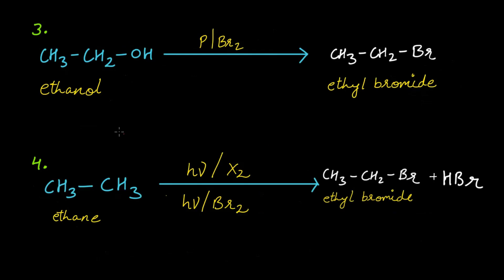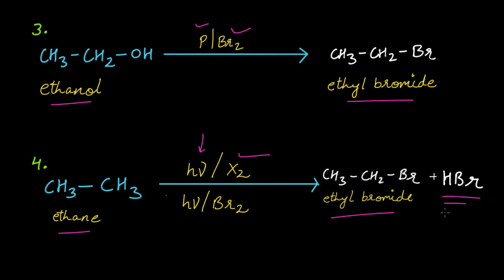The third method is when ethanol is treated with bromine in the presence of phosphorus, you get ethyl bromide. The fourth method is when ethane is treated with any halogen in the presence of sunlight or UV rays, you get ethyl bromide and HBr as byproduct. If chlorine is used instead of bromine, you will get ethyl chloride.